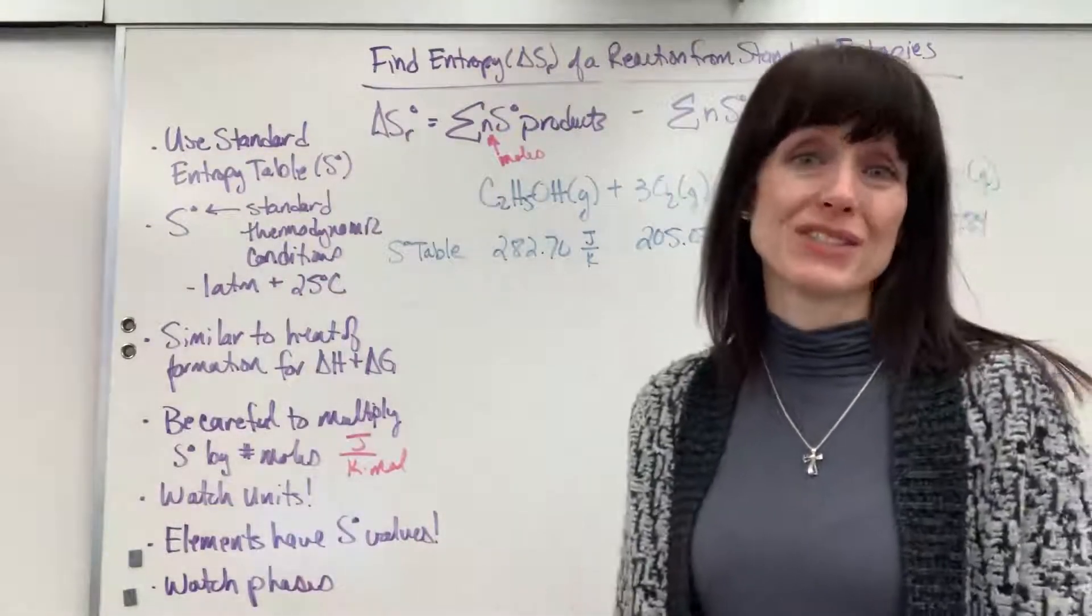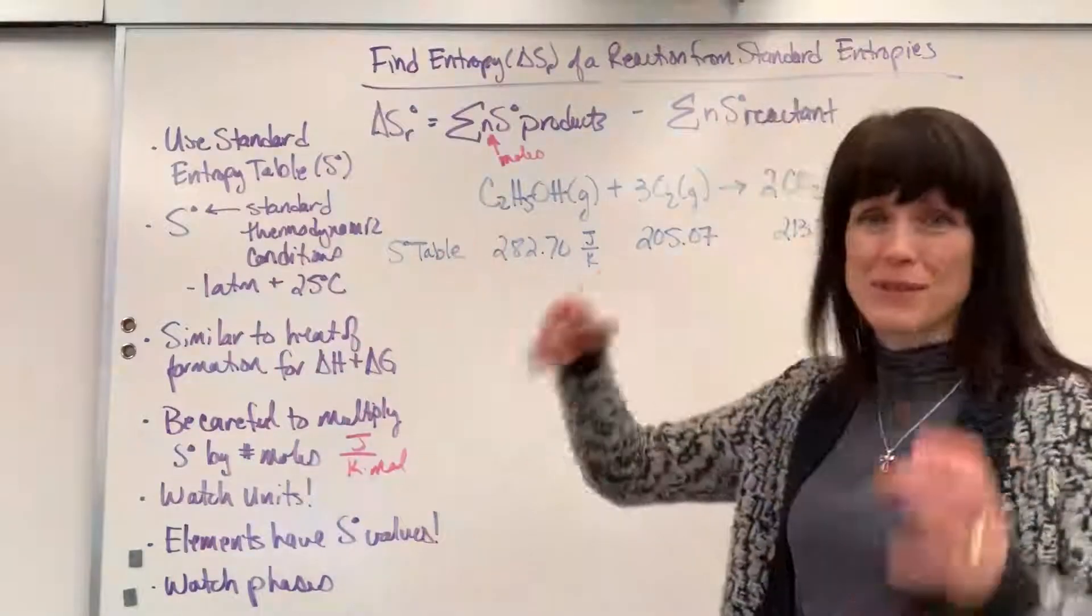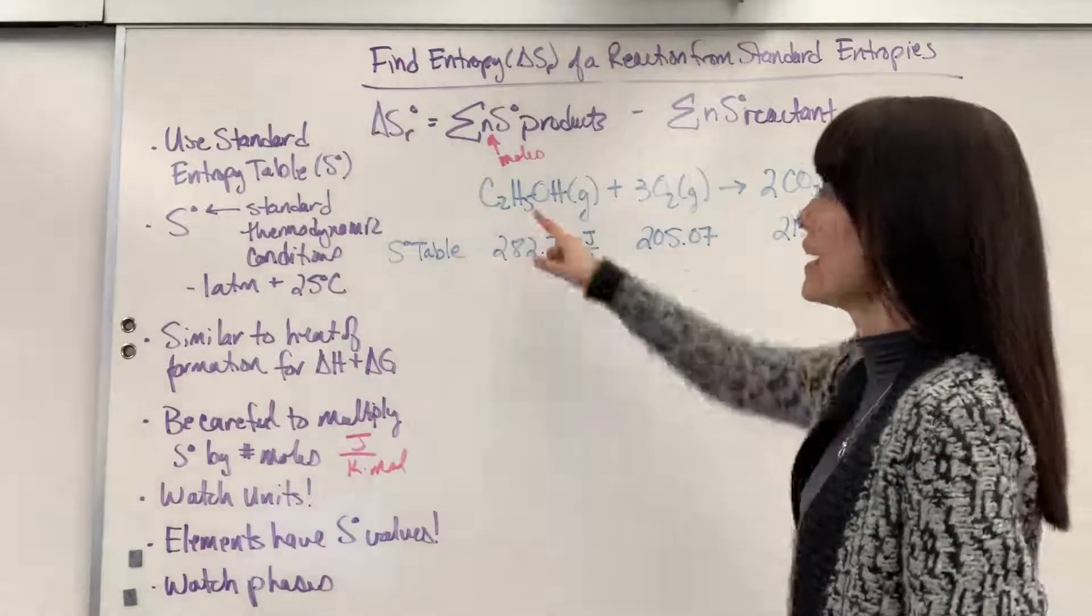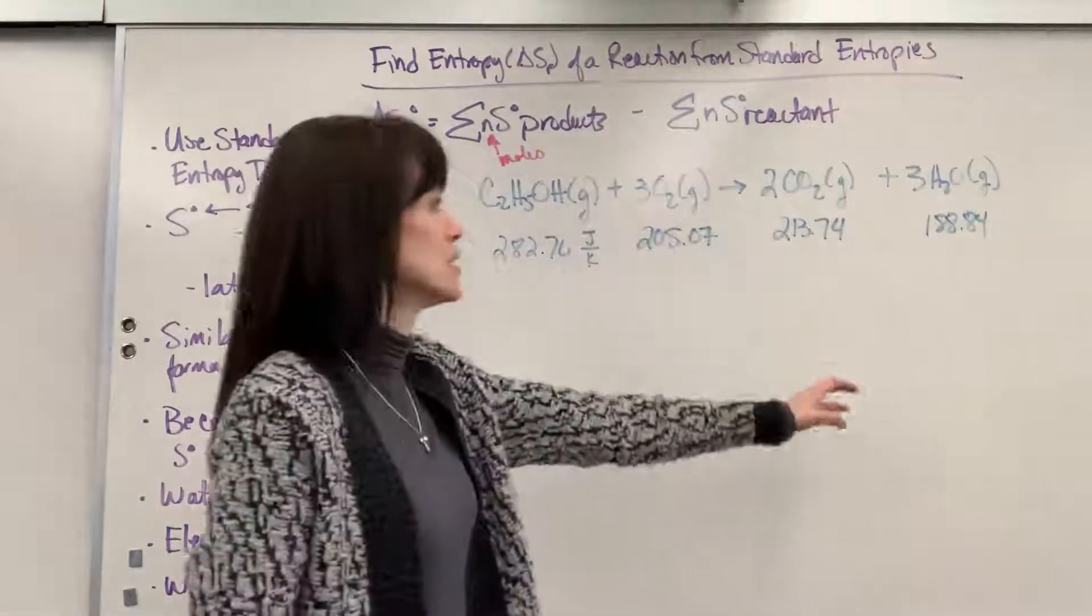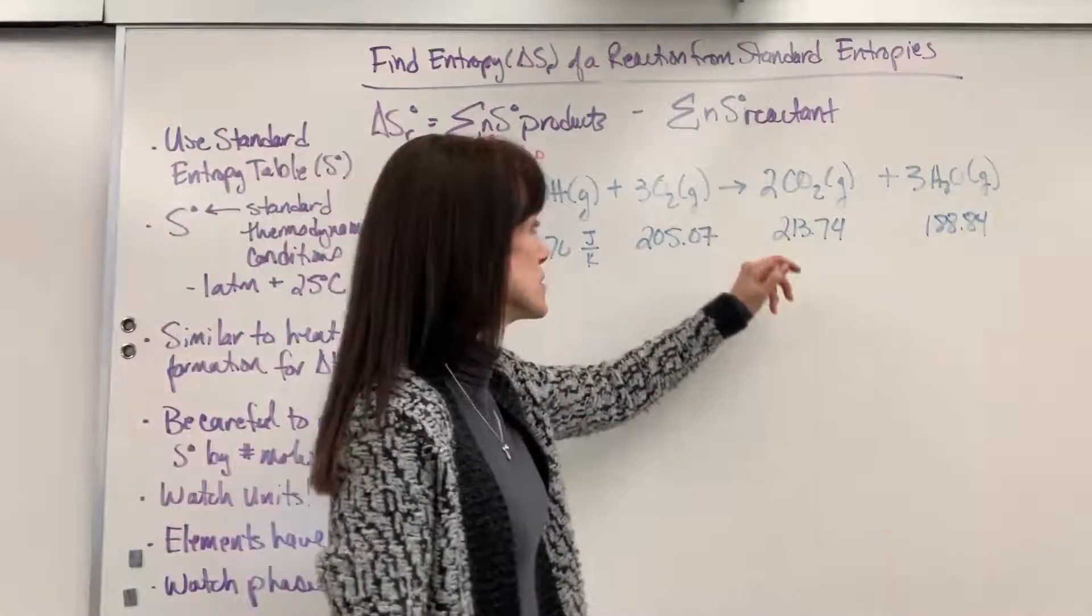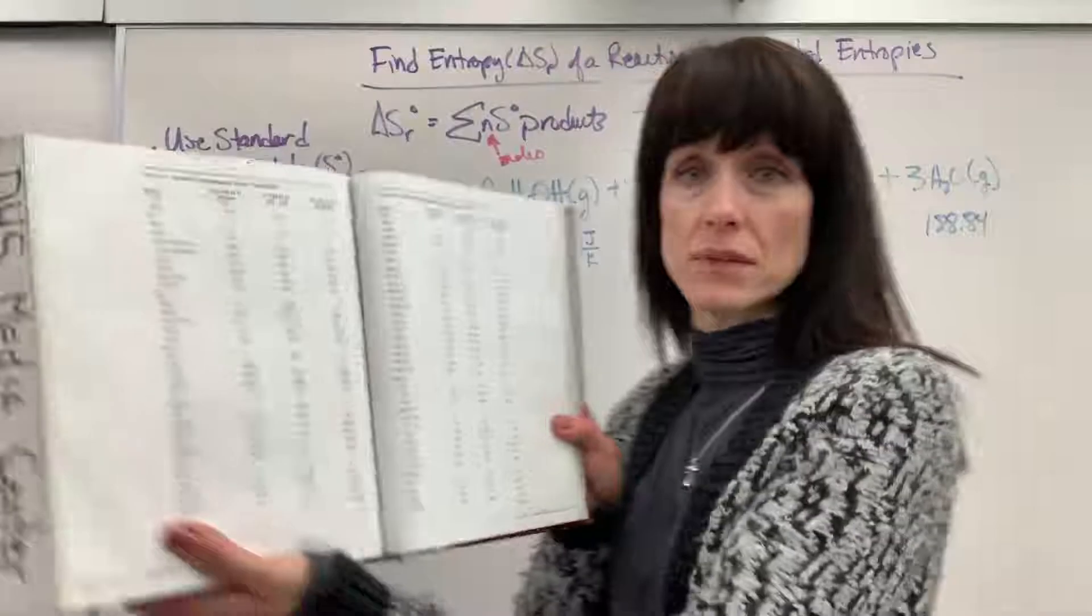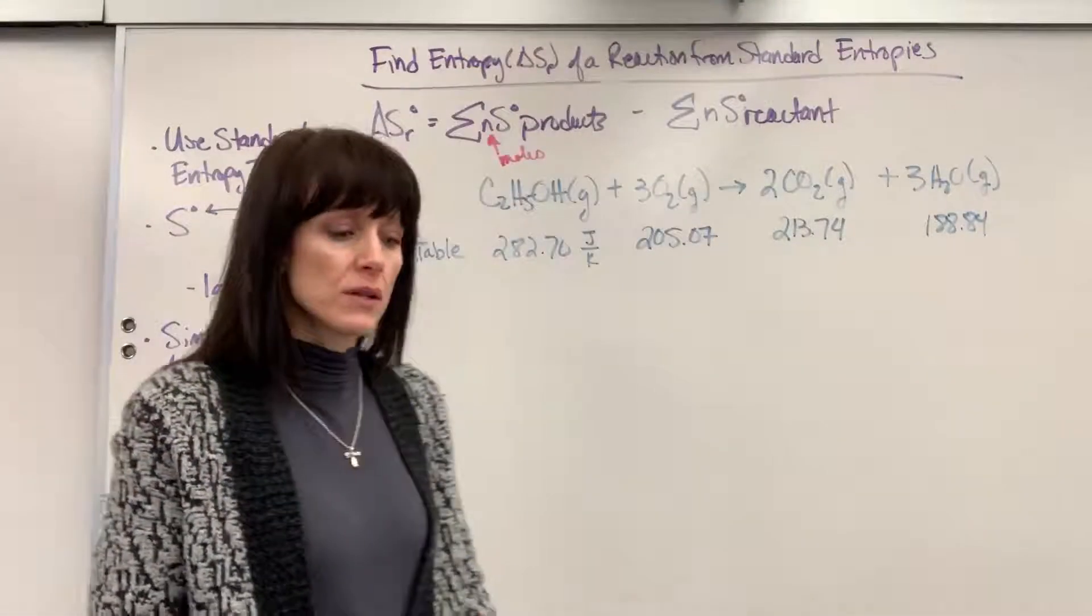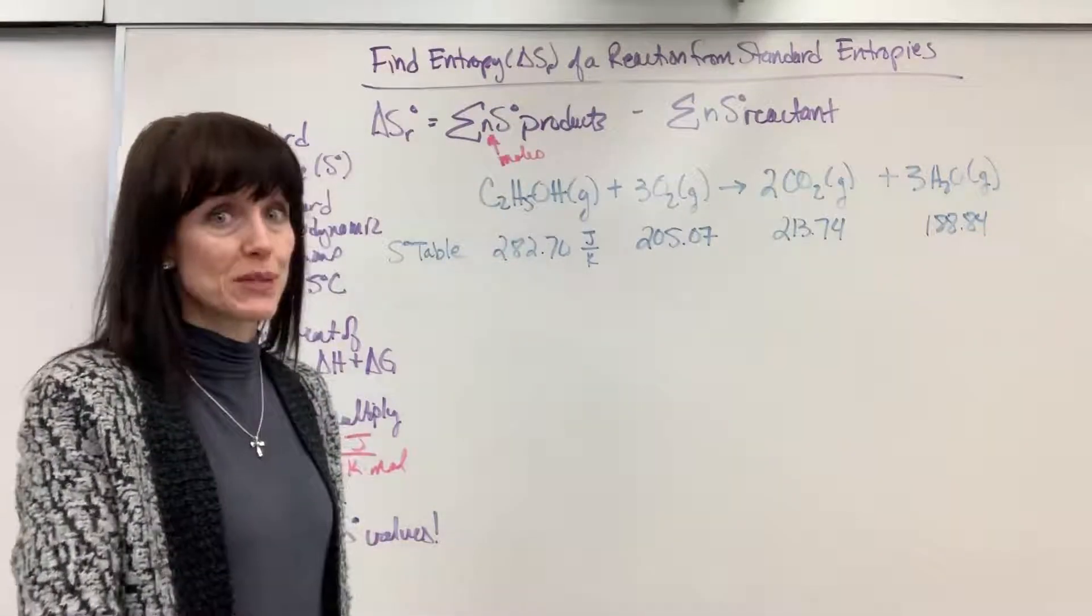All right, now, best way to do this always is just to show you an example. And I'm sure that you'll understand all of this. Be able to put all this together with the example. So we are going to take an ethanol. It's a gas. React it with three moles of oxygen. Just a combustion reaction. And it's going to produce two moles of CO2 and three moles of H2O. So I went to my table right here. Okay, you can Google this. You can look in a textbook, a reference book. We have lots and lots of tables of thermodynamic values.